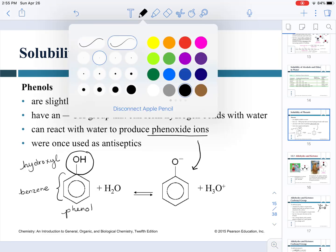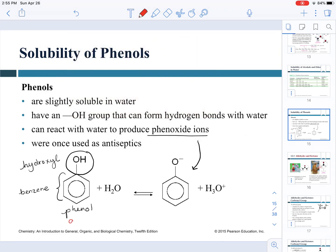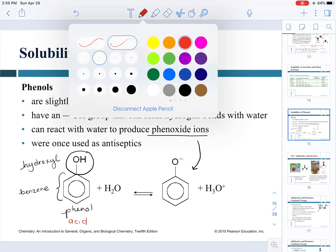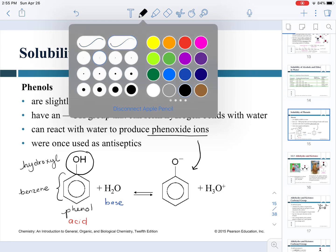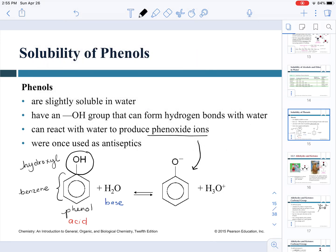In this case, phenol is going to act as an acid and water is going to be acting as a base. The phenoxide ion is the conjugate base of phenol, and the hydronium ion is the conjugate acid of the water.